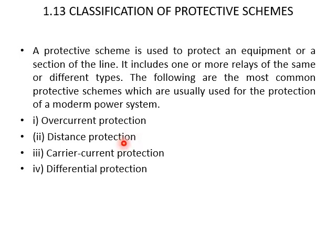Distance protection is used for the protection of transmission or sub-transmission lines, generally of 33 kV, 66 kV, and 132 kV. It includes a number of distance relays of the same type. The distance relay measures the distance between the relay location and the point of fault in terms of impedance or reactance, and operates if the point of fault lies within the protected section of the line. An impedance relay measures the line impedance between the fault point and the relay location.